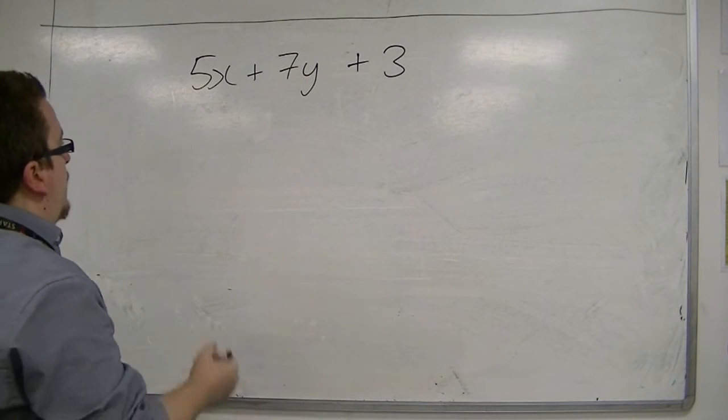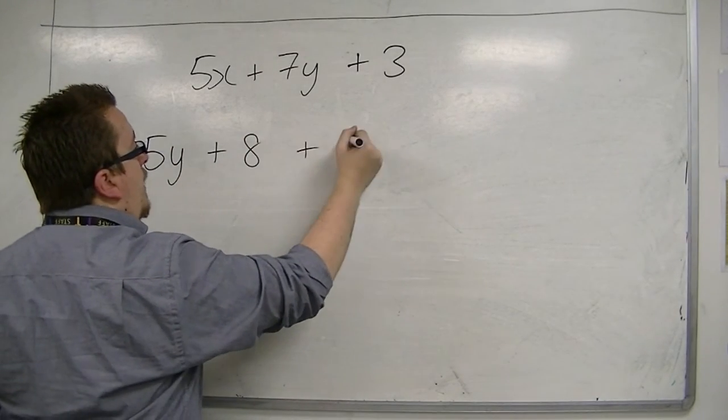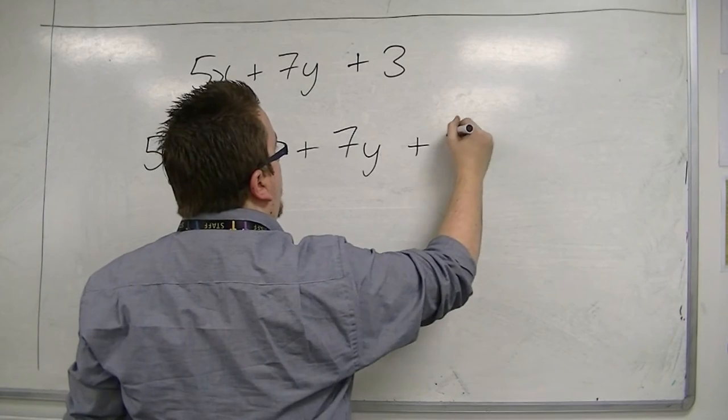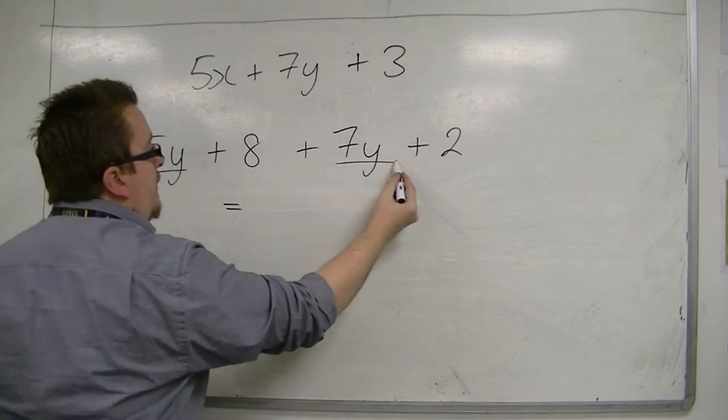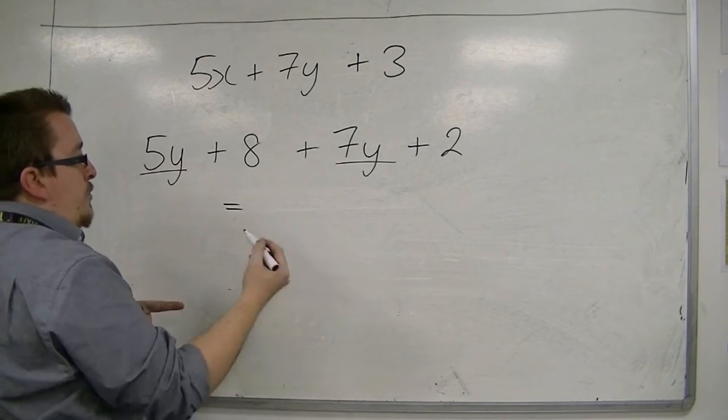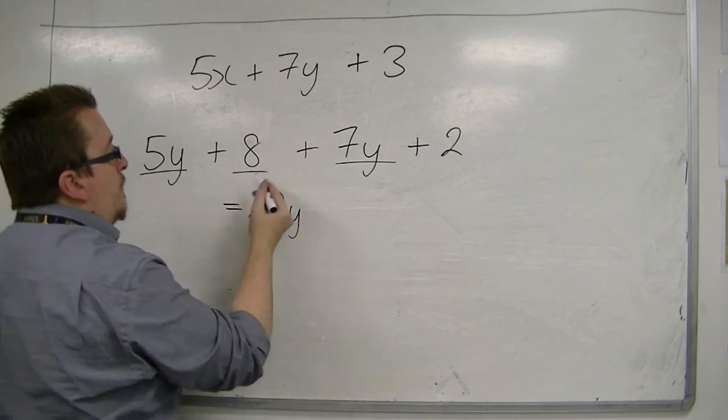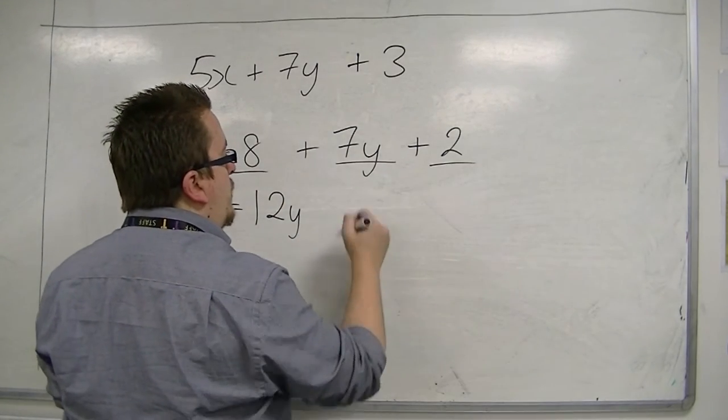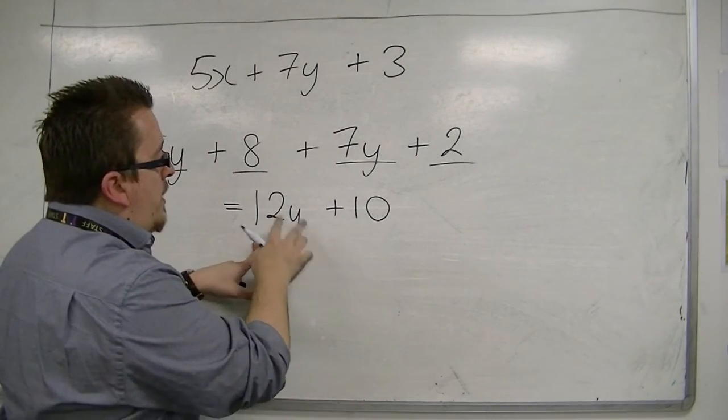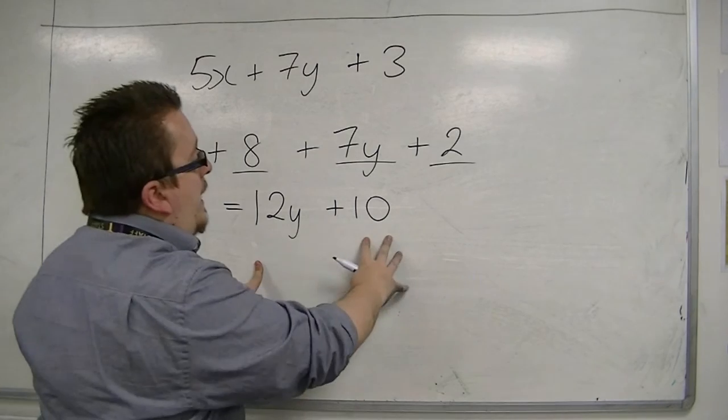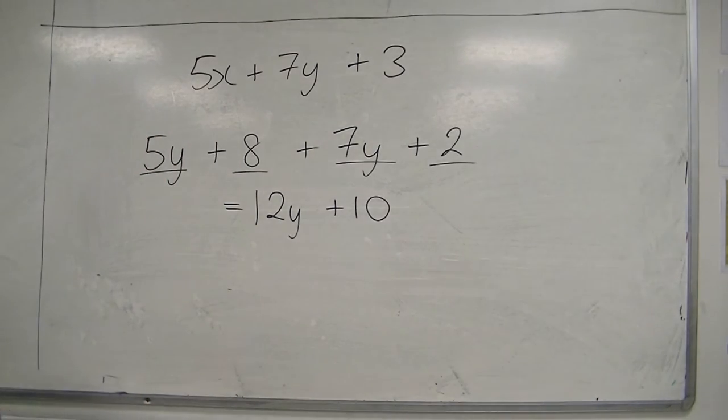So for example, if you had 5y plus 8 plus 7y plus 2, then you have got the 5y's and 7y's, so in total you have got 12y's, and then you have got these numbers by themselves, you have got the plus 8 and you have got the plus 2, so they combine to make plus 10. And there is no way that I can combine the y's pile and the number pile, the 12y's and the 10. So there is no way of combining them.